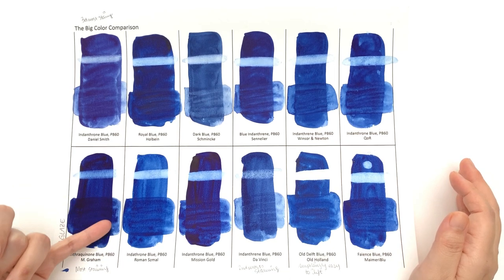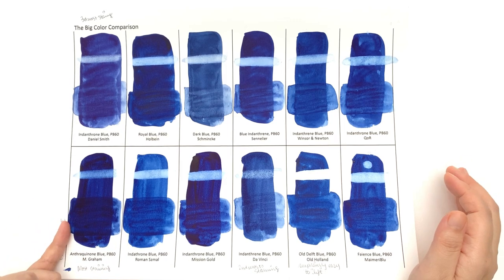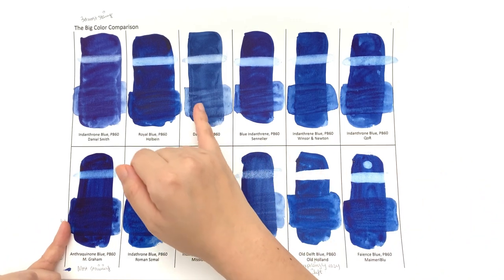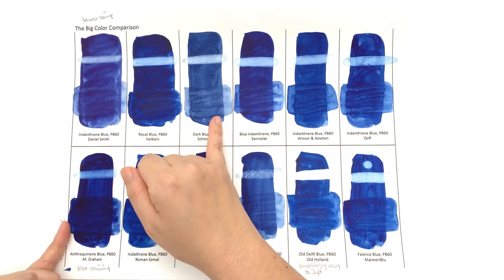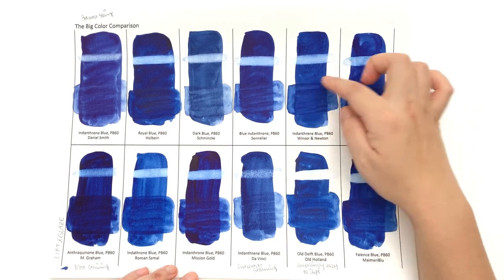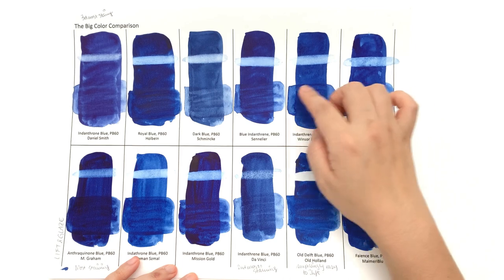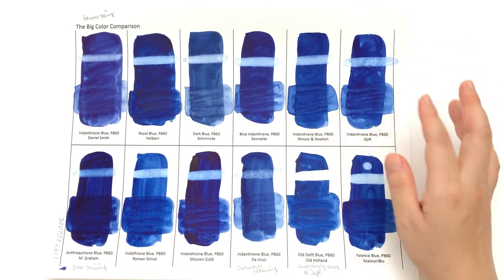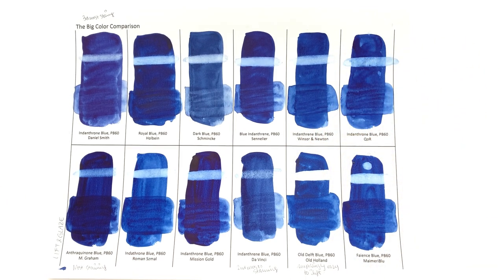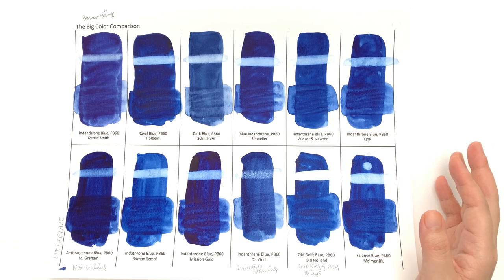Whereas, say, like Schmincke, you get a lot of lifting coming up. You also get the same with Windsor Newton, where you can see the outline, and then when I came to fill the square, that paint had already lifted. That is not ideal. So if you are going to use Indanthrone Blue as a glazer, you're going to have to pick your brands very carefully.